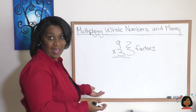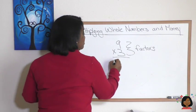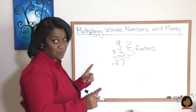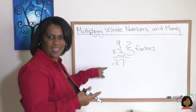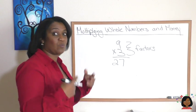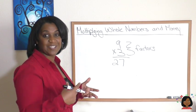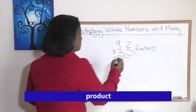When we multiply nine and three together we get 27, and we also have a special name for this. When we multiply two or more factors together, our answer is called the product.